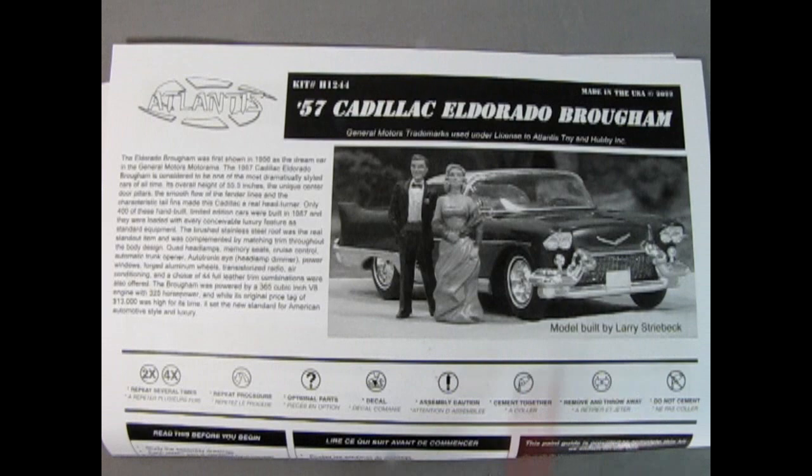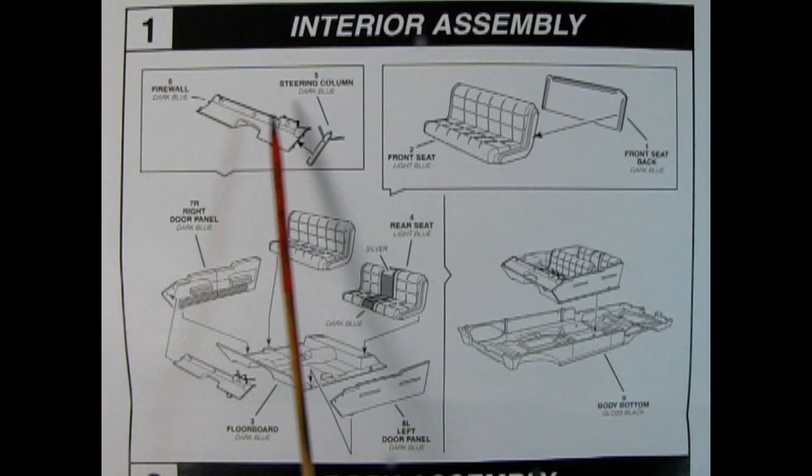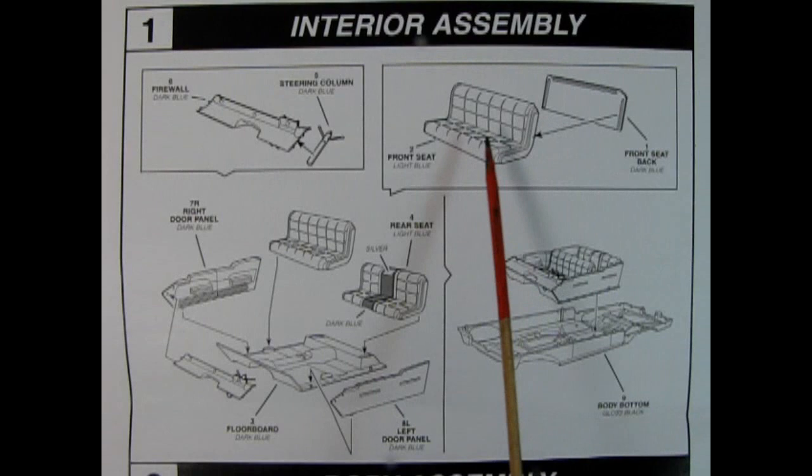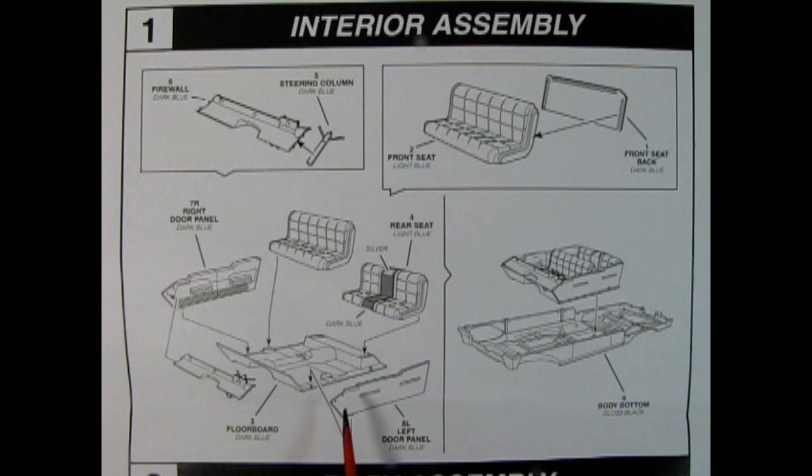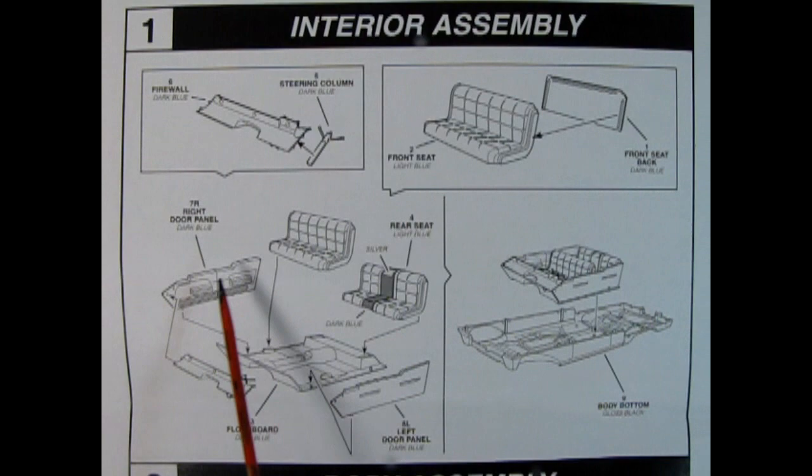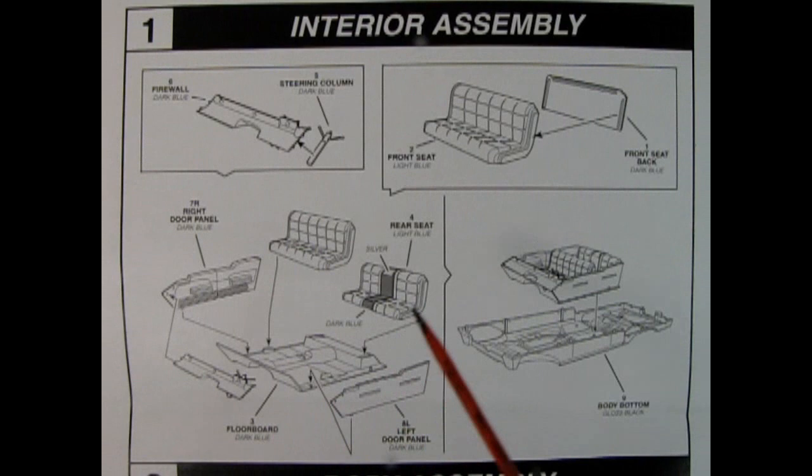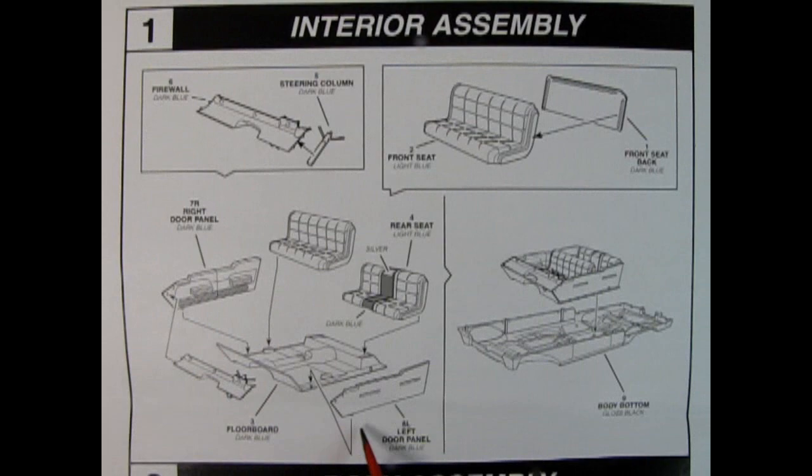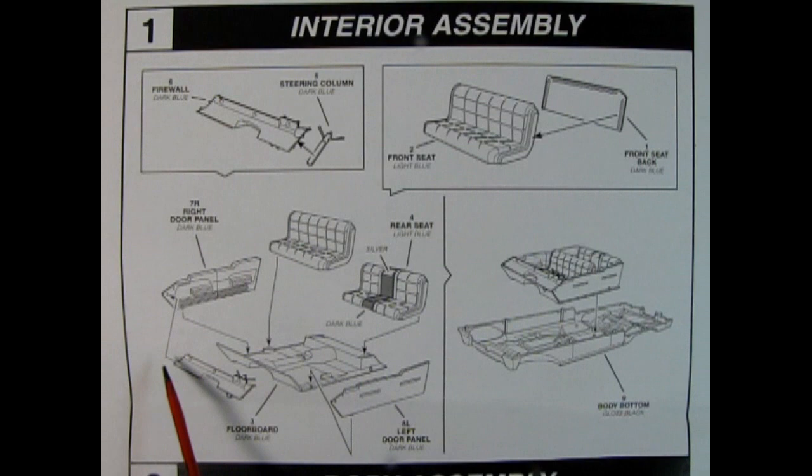To begin with, we start with our interior assembly, and here we have the firewall with the steering column being glued up underneath. There is a little cradle for that. We have our front seat and the front seat back, which glue together. And then you've got your interior. Now, what's interesting about this is it's basically built like a modern model car kit, with these side door panels molded separately and the floor pan and the seats all as separate. So you're going to put your rear seat back here, your front seat into here, and then your right and left hand side door panels here. And then the dashboard goes into those little two holes there. Then the whole thing gets dropped into the body bottom.